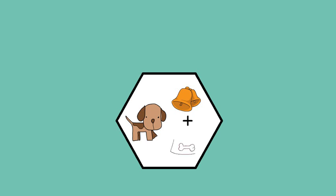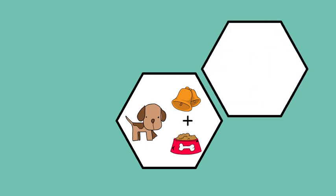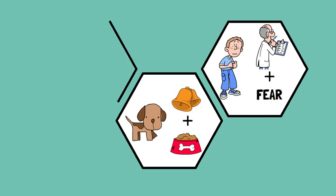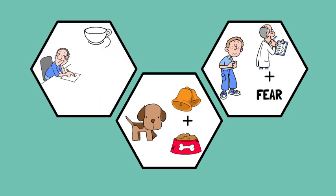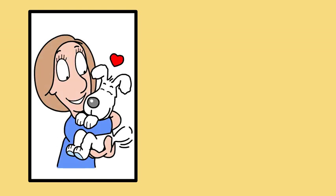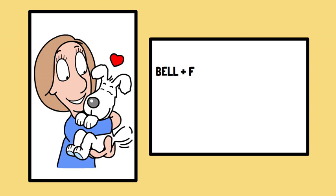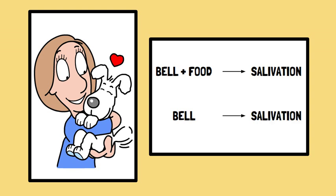Classical examples include a dog associating the sound of a bell with food, a child associating the sight of a doctor's coat with fear, or a person associating the smell of coffee with wakefulness. One famous example is Pavlov's experiment with dogs — he rang a bell every time he gave the dogs food, so eventually the dogs started salivating just at the sound of the bell, even when there was no food present.